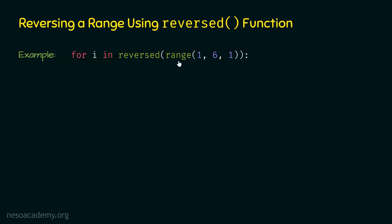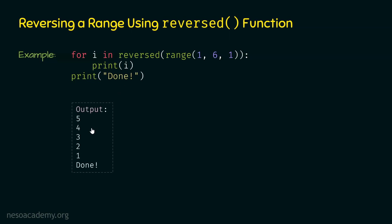This result is provided as the argument to the reversed function. The job of the reversed function is to reverse the range, so it will return values starting from 5 down to 1 — that is 5, 4, 3, 2, and 1. We use print i inside the for loop and print 'done' outside. After executing this code, the output is 5, 4, 3, 2, 1, and then 'done'.